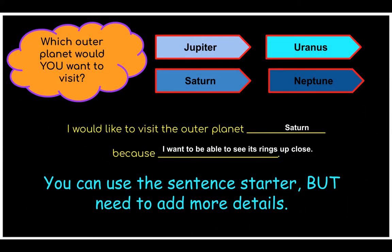Boys and girls, just like you did yesterday, today you get to write an opinion statement about which outer planet you would want to visit — Jupiter, Saturn, Uranus, or Neptune. You may use the sentence starter on your Google document: 'I would like to visit the outer planet ___ because ___.' For example: 'I would like to visit the outer planet Saturn because I want to be able to see its rings up close.' Remember to add details and information you've heard from the story. You will be provided with a planet chart that has facts, or you can go back and listen to the story again. Have fun — we can't wait to hear your opinions!